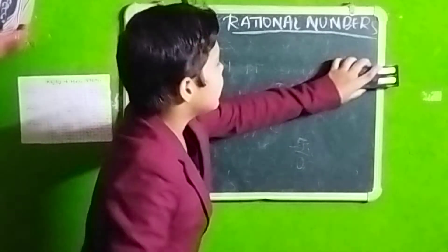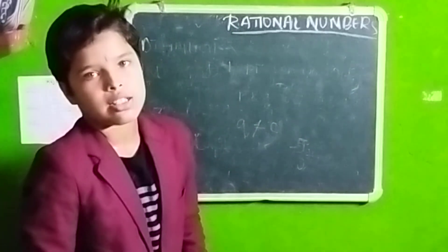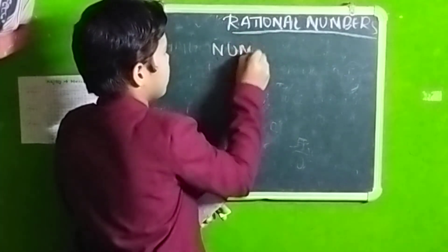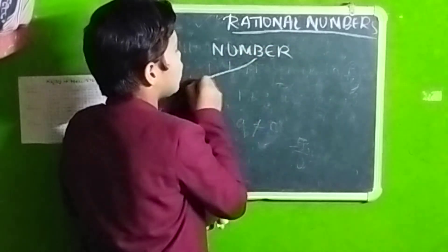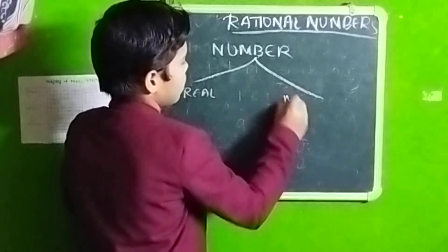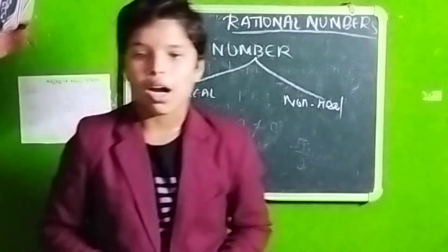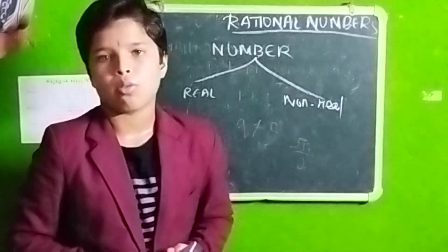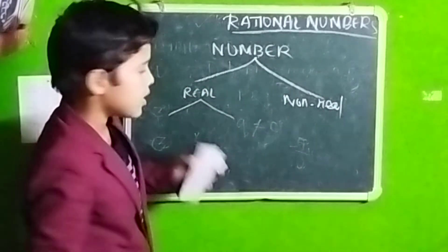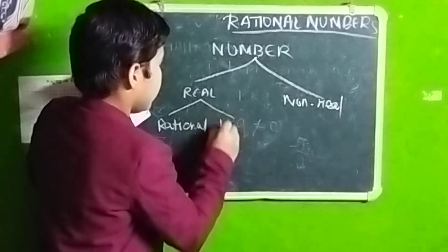Now we will move on to the types of Rational Numbers — the different categorizations. First of all, we need to understand that numbers are generally of two types: real and non-real. This is also important before understanding the introduction of Rational Numbers. Real numbers are once again divided into two parts: Rational and Irrational.